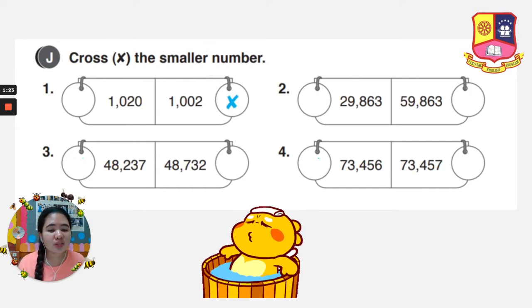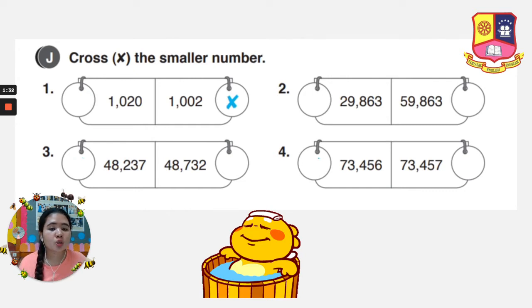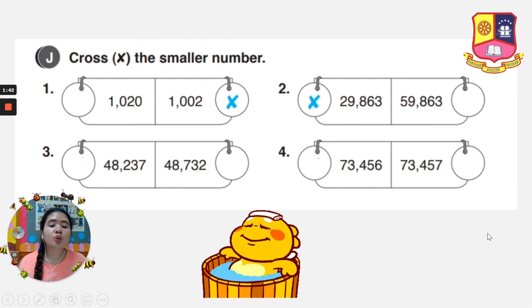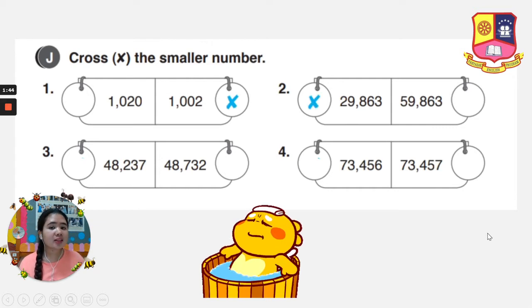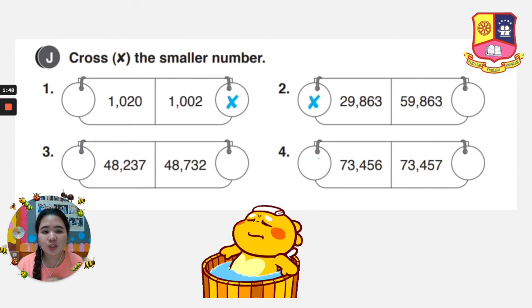Let's go to number 2. We have 29,863 and 59,863. They are both 5 digits. Let's compare: 2 and 5 — which one is smaller? 2 or 5? So the answer will be 29,863.